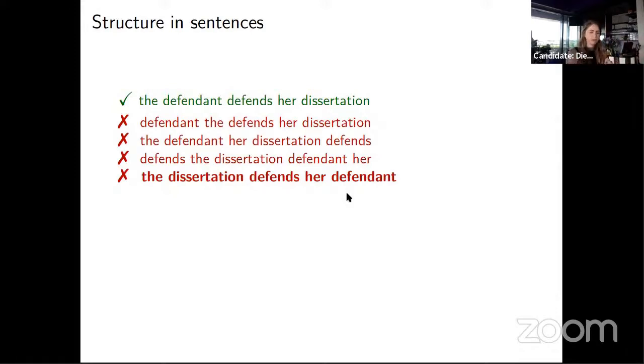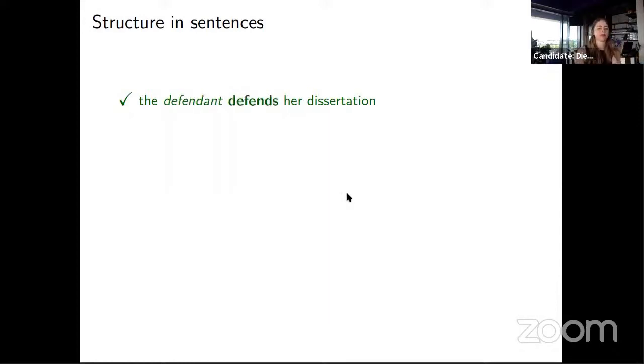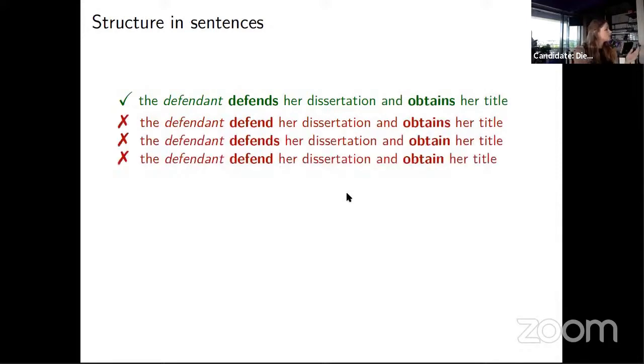Then even in this short sentence, we can already see a short distance dependency between the subject 'defendant' and the verb 'defends.' The subject is singular, so the verb also needs to be singular. In this case, this is a very short dependency, but it can also be longer. For instance, if I add another verb at the end: 'the defendant defends her dissertation and obtains her title,' I cannot use different forms—it has to be this form.